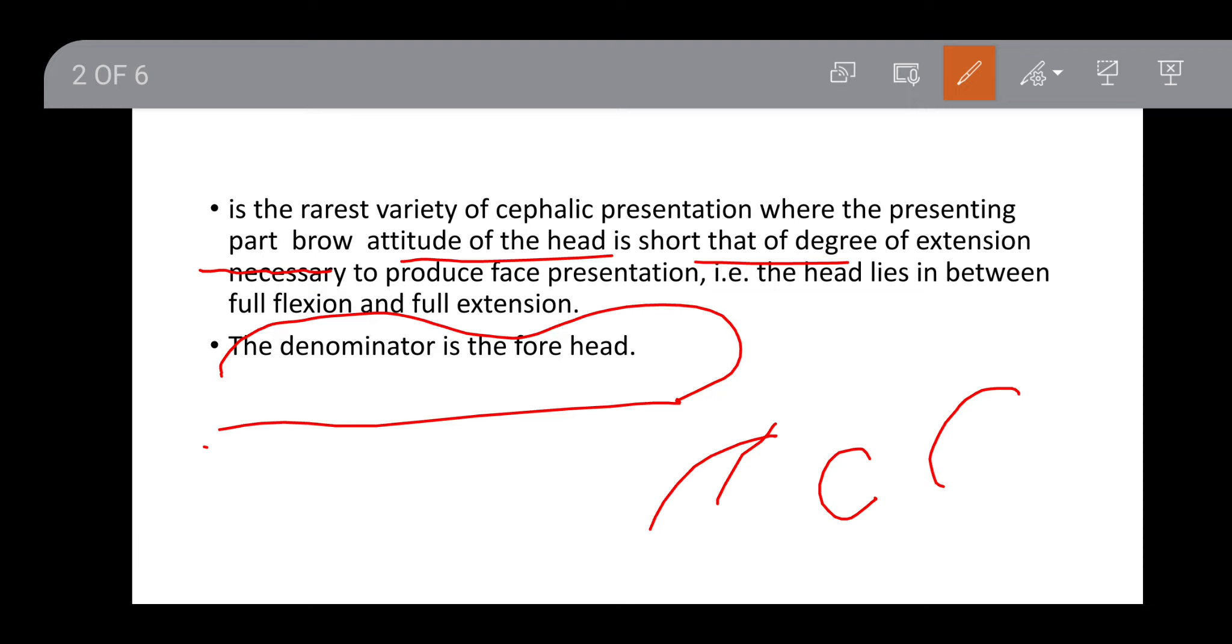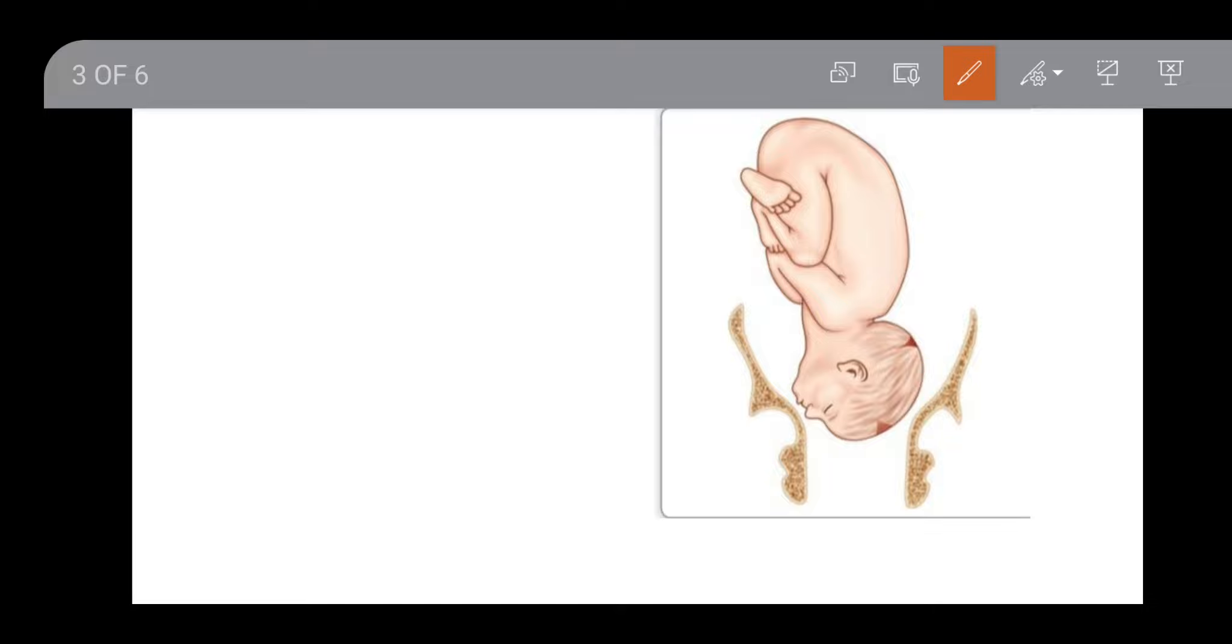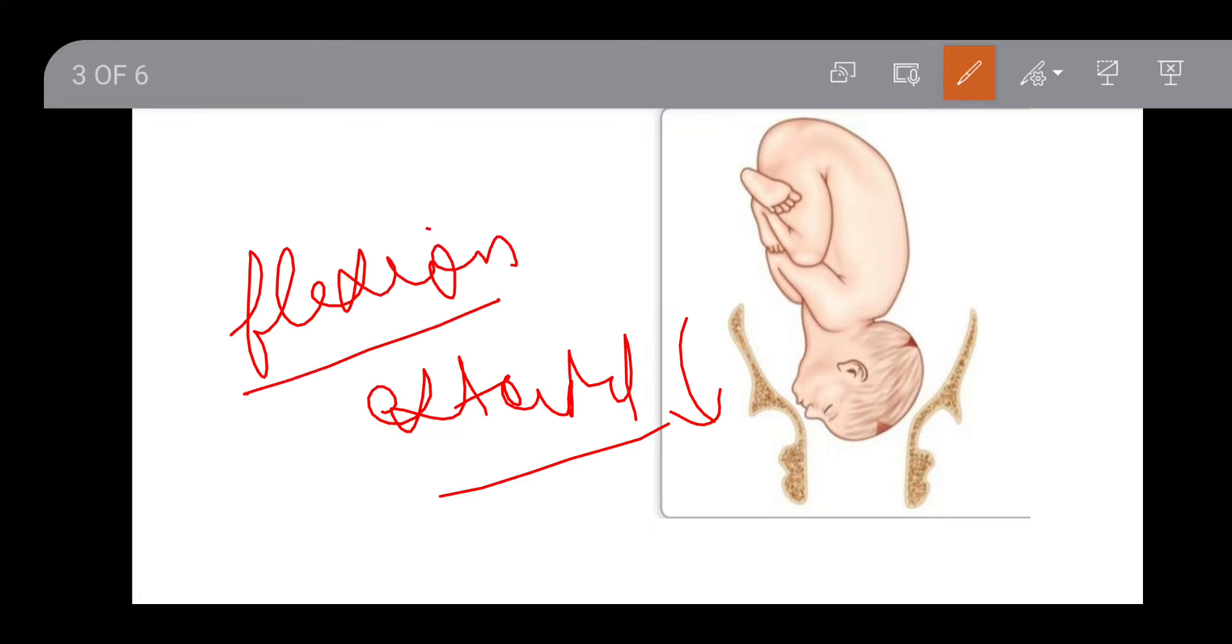The denominator is the fetus's forehead. This is the diagram of brow presentation. You will see that the fetus's head is slightly extended. Normal is flexed with full flexion where all body parts are close together, but here the neck and head area is extended, meaning partially extended.